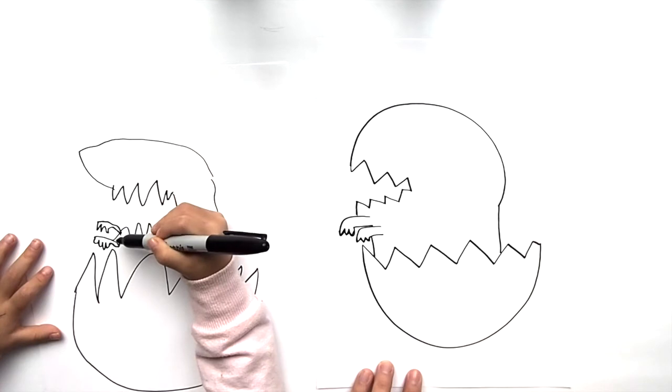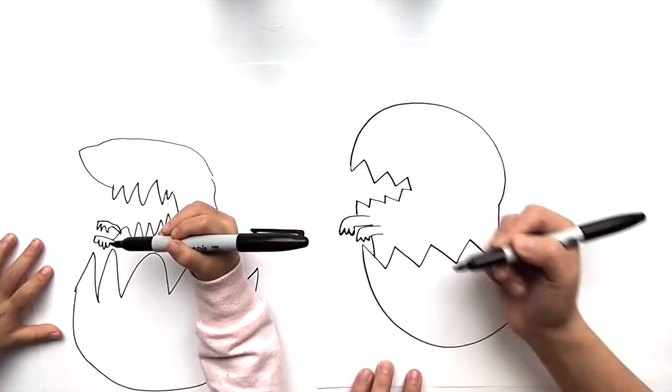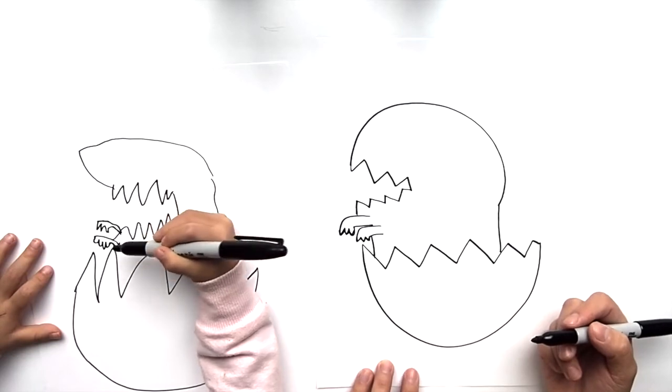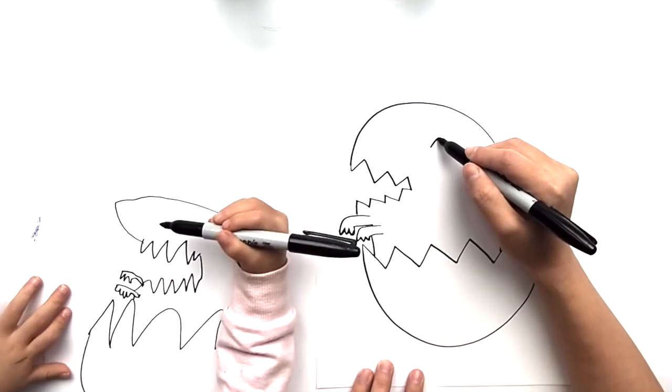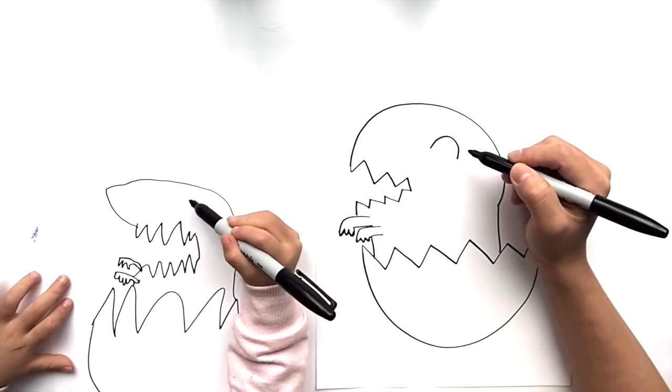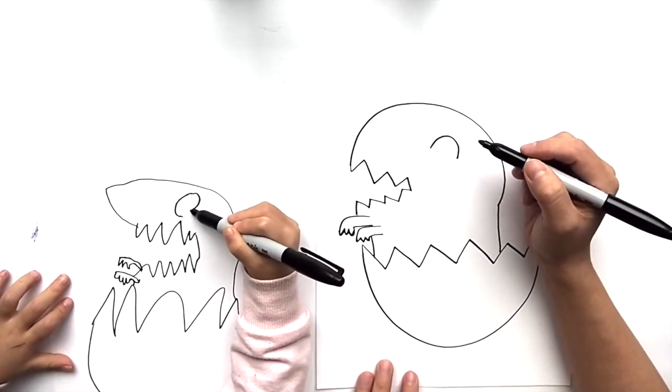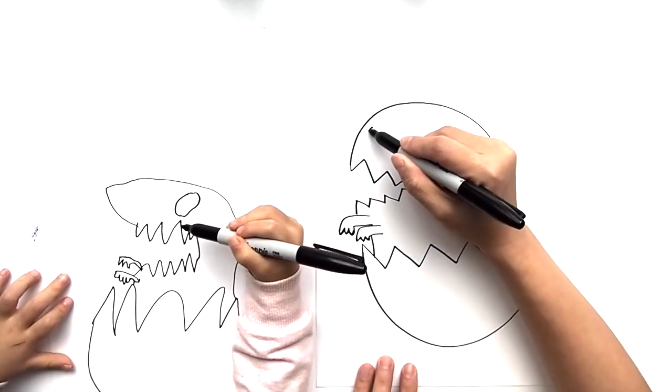Just draw a line to the egg, so from its arms connecting to the eggshell. Yep. And then it's gonna have really cute eyes. It's a baby, so just be a little arch. Yeah. And then his little snout.